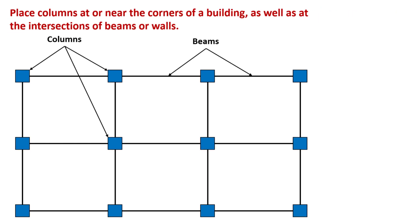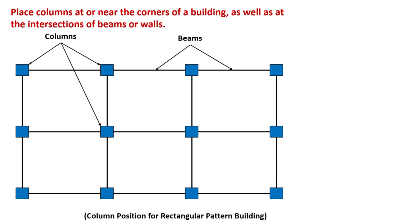This picture illustrates the placement of columns at the intersections of walls and at the corners of a building. The primary purpose of columns is to provide support to the beams which are placed underneath the walls to provide support.